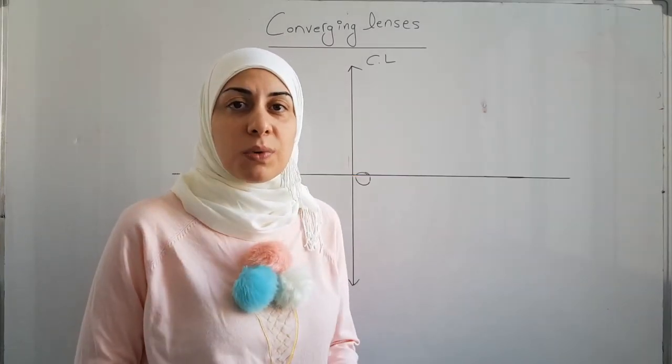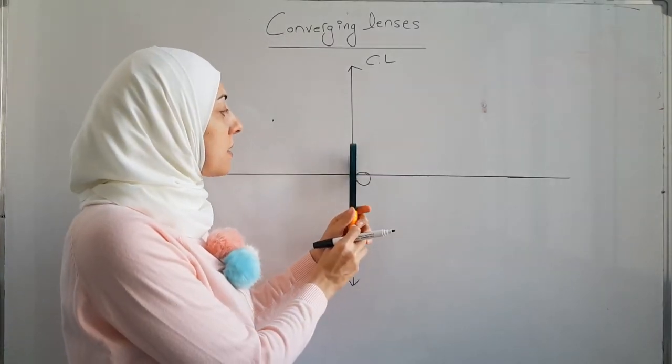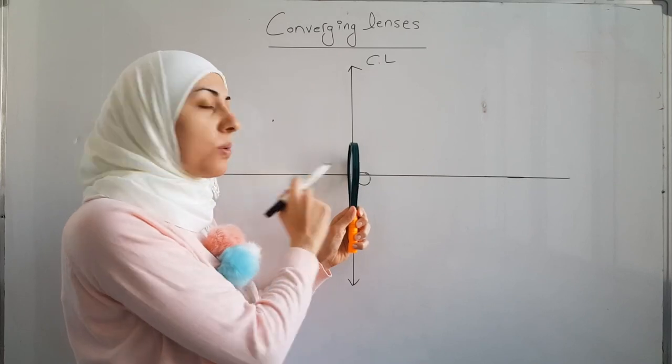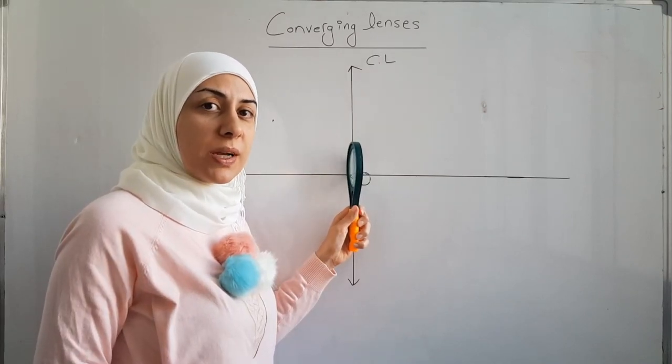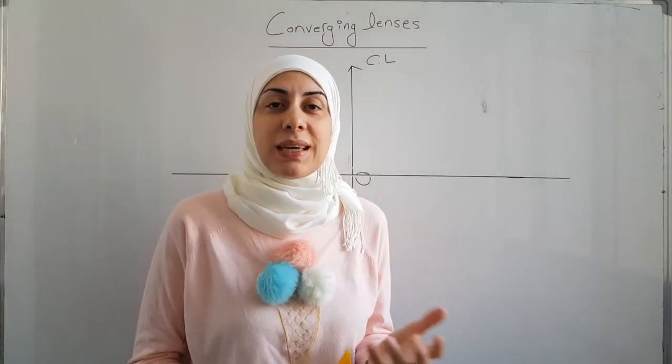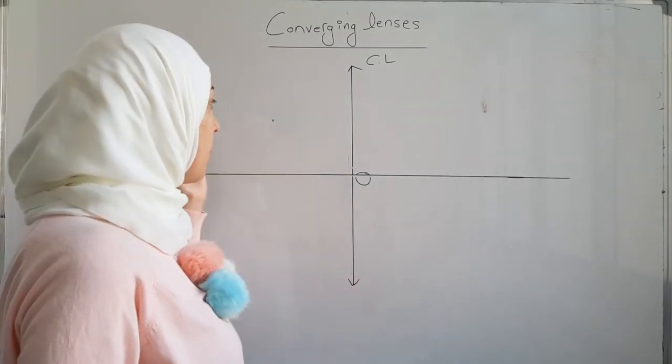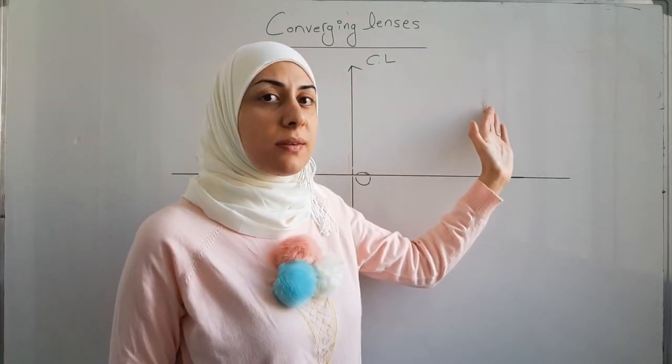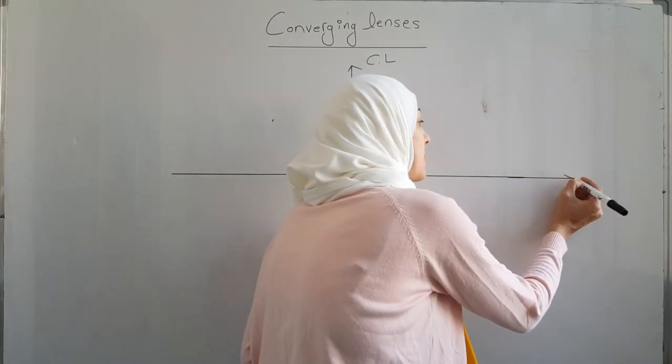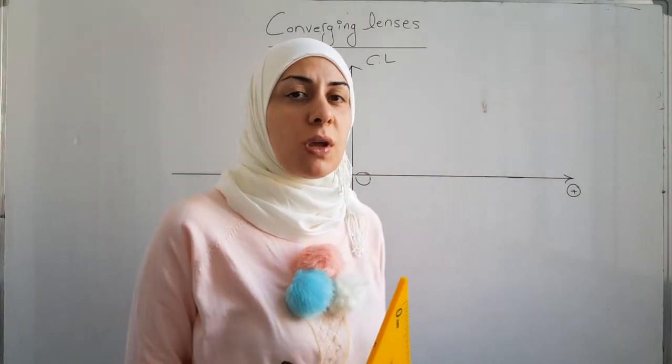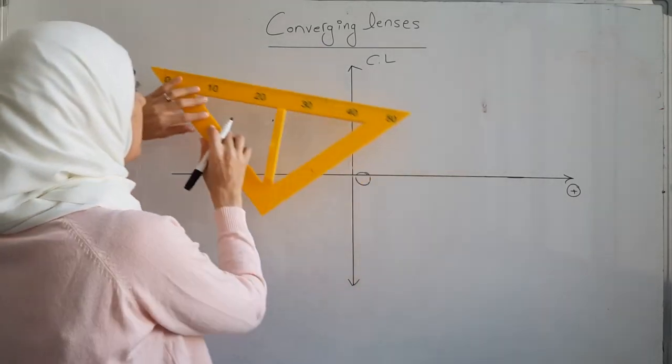By imaginary line we mean when you use the converging lens you don't see this line, we just draw it for practical purposes. We can also indicate the direction of propagation of light on the optical axis. So if the light moves from left to right, we can put this as the positive direction of propagation of light.